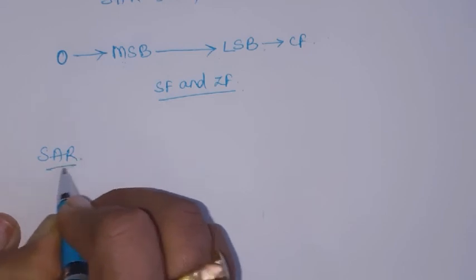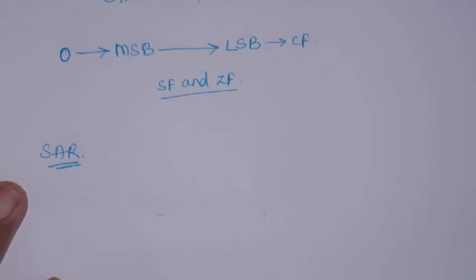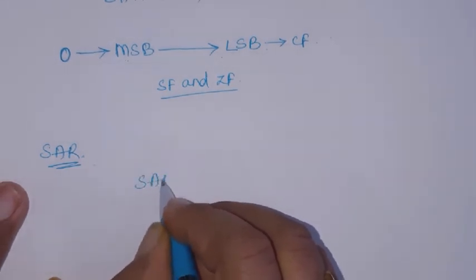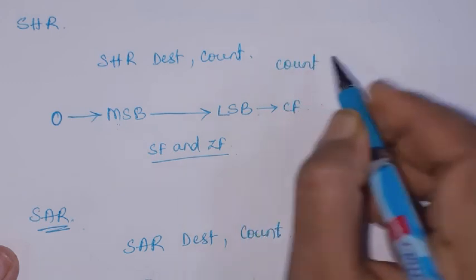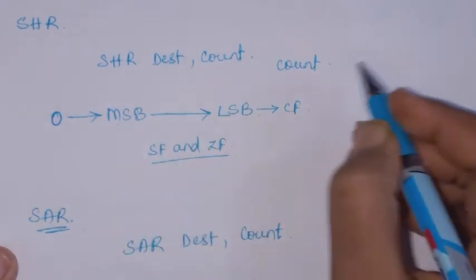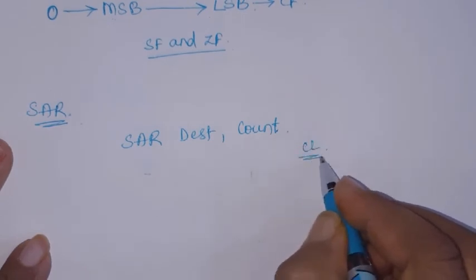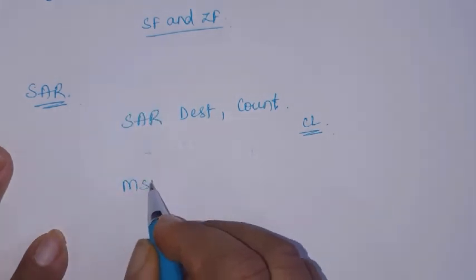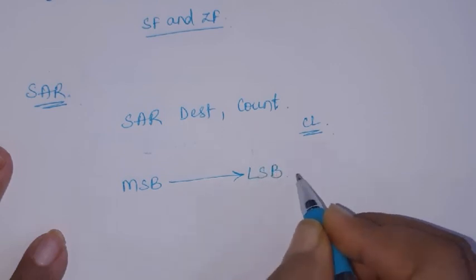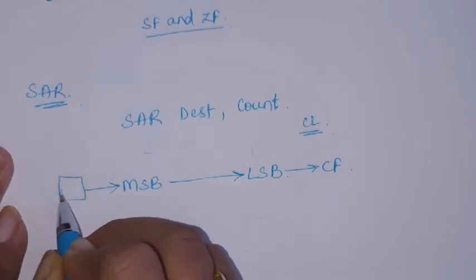Then we have SAR — arithmetic shift right. This is used when working with signed numbers. The format is SAR destination, count. If count equals 1 it can be specified in the instruction; if greater than 1, it should be in the CL register. The key difference is that the LSB bit shifts to the carry flag, and the MSB is copied from the previous MSB.